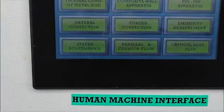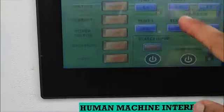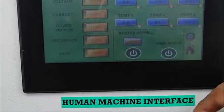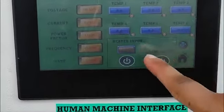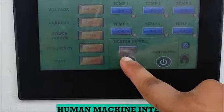We have to select for pin fin apparatus. So here we have pin fin apparatus. This is the data related to the pin fin apparatus: T1, T2, T3, T4, T5, T6. Heater input, we have to enter the voltage of the heater here.